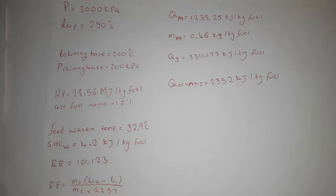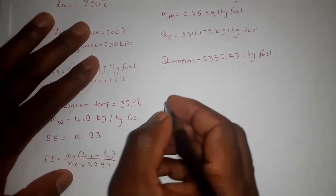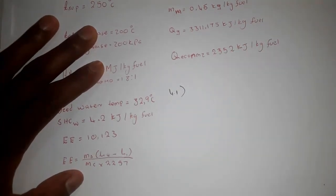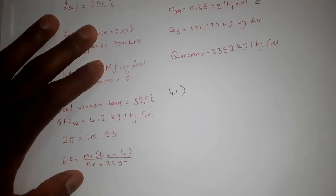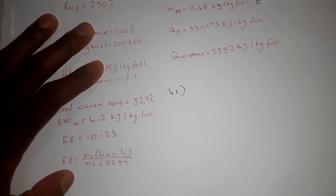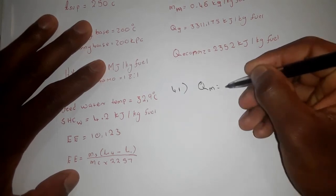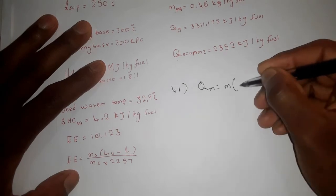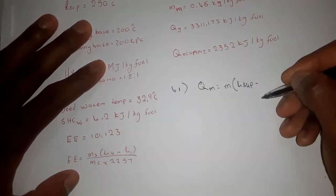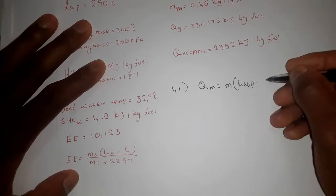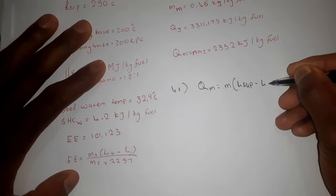For question 4.1, we calculate the atmospheric temperature. We use the formula for heat energy that went out with the moisture, since we have the mass of moisture and that formula contains the atmospheric temperature. The heat energy that went out with the wet gases equals mass times (H_superheat minus H_atmosphere), where H_atmosphere uses the specific heat capacity times the atmospheric temperature.